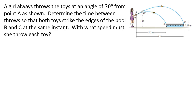This is Professor Cummings. A girl always throws the toy at an angle of 30 degrees from point A as shown. Determine the time between throws so that both toys strike the edges of the pool B and C at the same time. With what speed must she throw each toy? She's throwing through two different trajectories going from point A, which is her hand, to points B and C. Her hand is consistently one meter high, point B has a horizontal distance of 2.5 meters, and point C has a horizontal distance of 4 meters and a vertical distance of 0.25 meters.